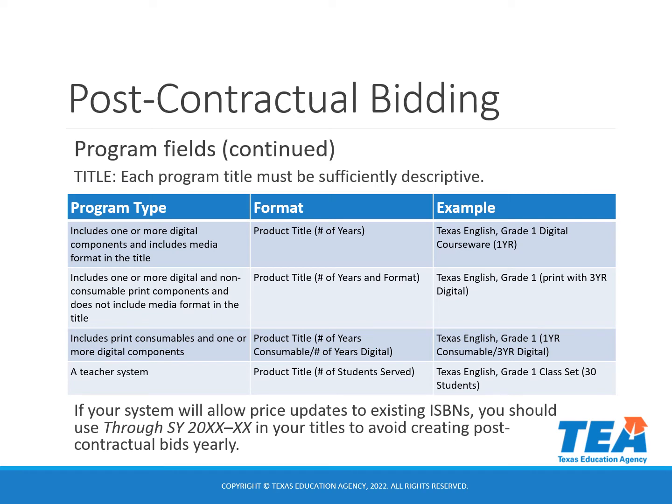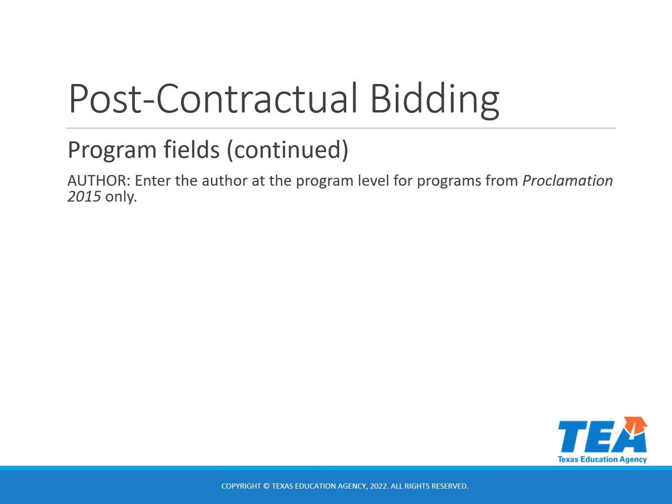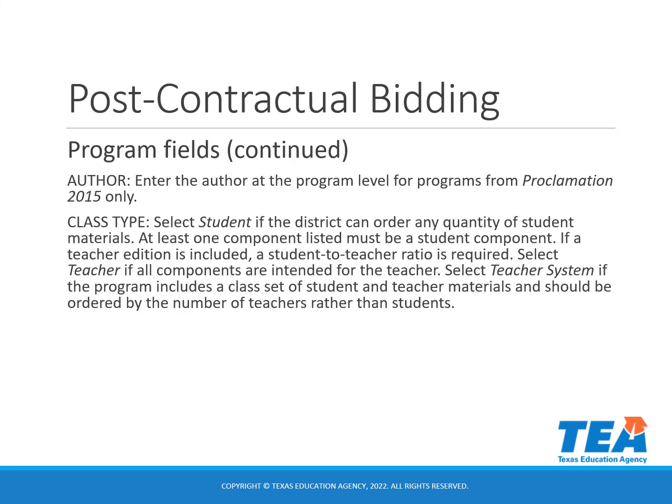If your program will allow price updates to existing ISBNs, you should use the through school year format in your titles to avoid creating post-contractual bids yearly. You will only enter the author at the program level for programs from Proclamation 2015; for all other proclamation years, you will enter the author at the component level. For the class type, you will select student if the district can order any quantity of student materials — at least one component listed must be a student component. If a teacher edition is included, a student-to-teacher ratio is required. You will select teacher if all components are intended for the teacher. Select teacher system if the program includes a class set of student and teacher materials and should be ordered by the number of teachers rather than students.